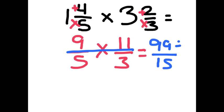I see that they both can be divided by 3. 99 divided by 3 is 33, 15 divided by 3 is 5.